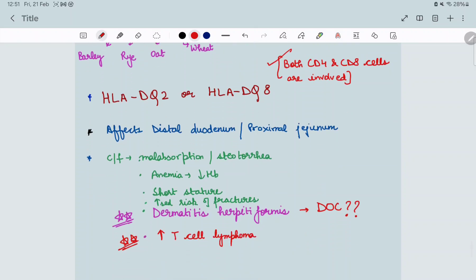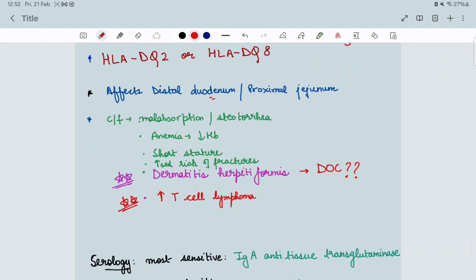What are the clinical features? As it is affecting duodenum and jejunum, there will be malabsorption, steatorrhea. As the fat soluble vitamins will not be absorbed, there will be anemia because iron is not being absorbed. So there is decreased hemoglobin, short stature is present, and there is increased risk of fractures also.